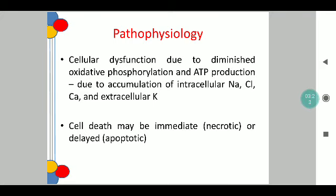At a cellular level, cellular dysfunction occurs because of diminished oxidative phosphorylation and diminished ATP production, as a result of which there is accumulation of intracellular sodium, chloride, and calcium, as well as extracellular calcium. Cell death might be either immediate or delayed — immediate cell death is because of necrosis, and delayed cell death might be because of apoptosis.